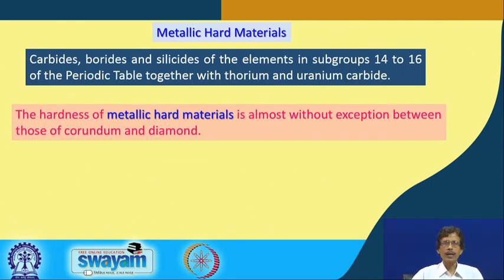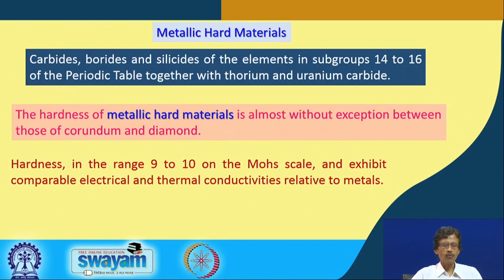The hardness of these metallic hard materials falls almost without exception between corundum and diamond on the hardness scale — that is, in the range of 9 to 10 on the Mohs scale. Silicon carbide, for example, also has correspondingly very high hardness in this range.